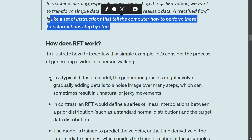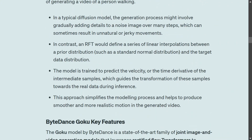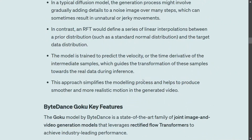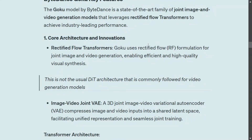In a typical diffusion model, the generation process involves gradually adding details to a noisy image over many steps, which can sometimes result in jerky movement. In contrast, a rectified flow model defines a series of linear interpolations. Rather than adding noise and then denoising, it performs a series of direct transformations. The model is trained to predict the velocity — the time derivative of the intermediate step — which guides the transformation of samples toward the real data, producing smoother and more realistic motion.